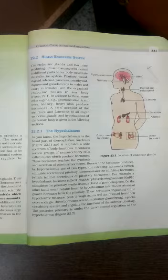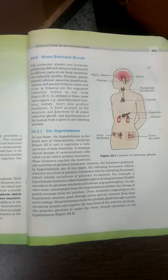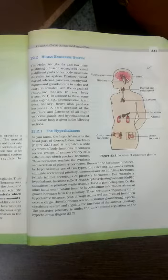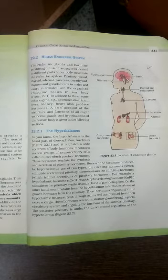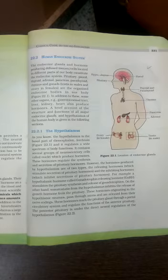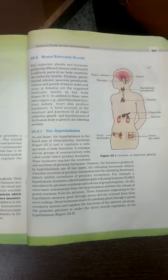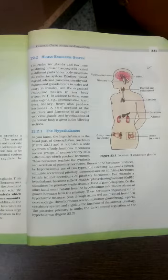The hormones produced by the hypothalamus are of two types: releasing hormones, which stimulate the secretion of pituitary hormones, and inhibiting hormones, which inhibit the secretion of pituitary hormones. Some books call these releasing factors and inhibiting factors — both terms are correct. For example, the hypothalamic hormone GNRH stands for gonadotropin releasing hormone. The word 'tropin' refers to hormones that target another gland and cause it to release hormones. So gonadotropin comes from the pituitary and targets the gonads — testes and ovaries.